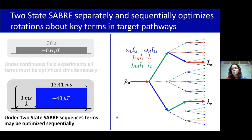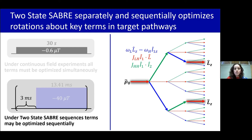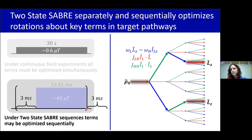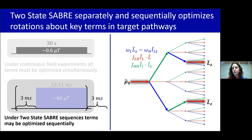Two-state SABR circumvents this problem by applying fields in a sequence that mirrors the on-target coherence transfer pathway, separately optimizing J_LH and the resonance frequency difference. The zero-field pulse optimizes evolution under the J_LH term. The higher-field pulse then facilitates evolution under the resonance frequency difference. Then the next pulse begins with another zero-field pulse, which either finishes transfer on some complexes or begins the process on others. We can freely optimize each term separately while favoring coherence transfer pathways with this alternating structure and inhibiting transfer down pathways that don't have this structure.